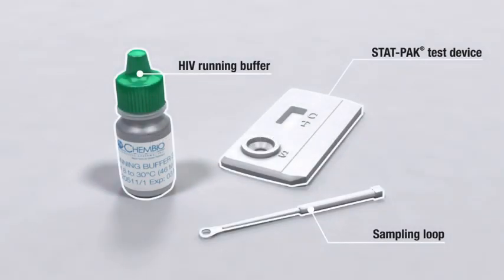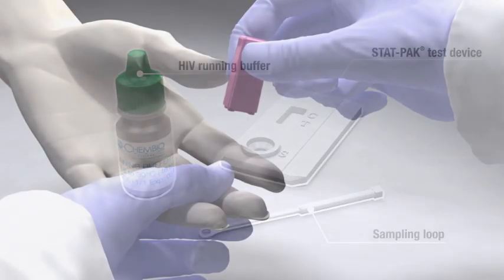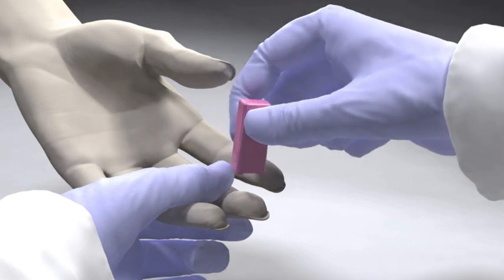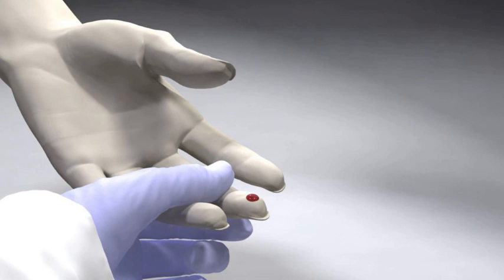Remove the STATPAC HIV-1 and 2 device from the foil pouch and allow it to reach room temperature. Obtain a venous or fingertip blood sample according to your normal laboratory practices.